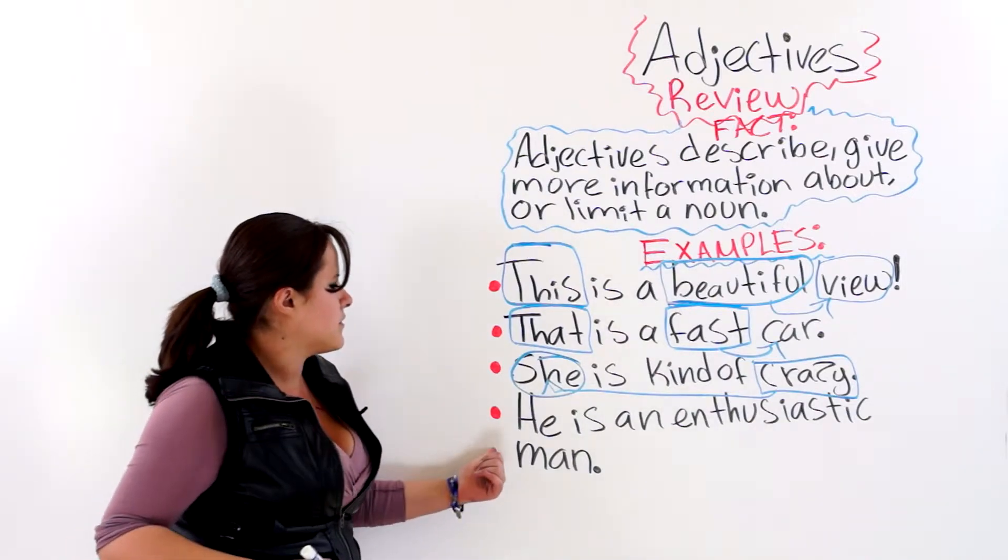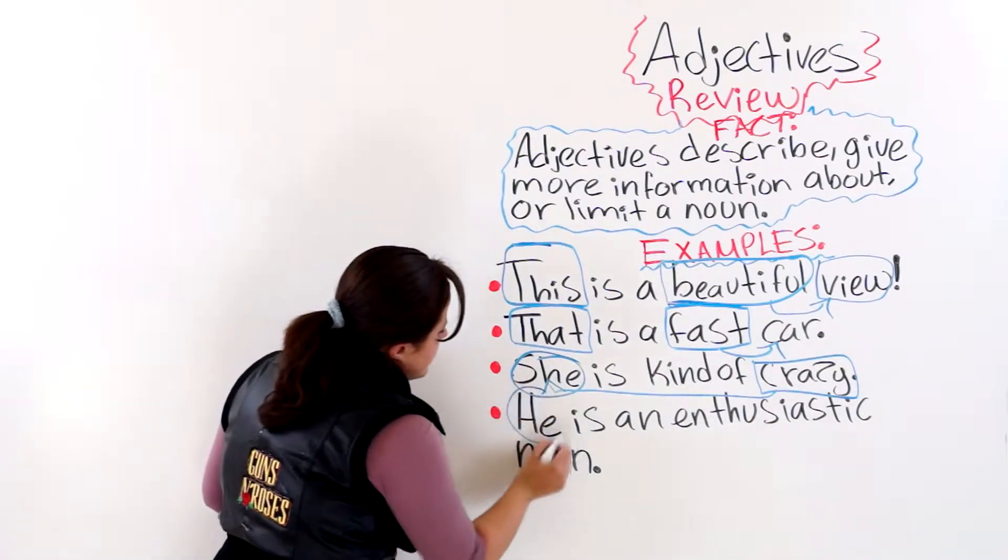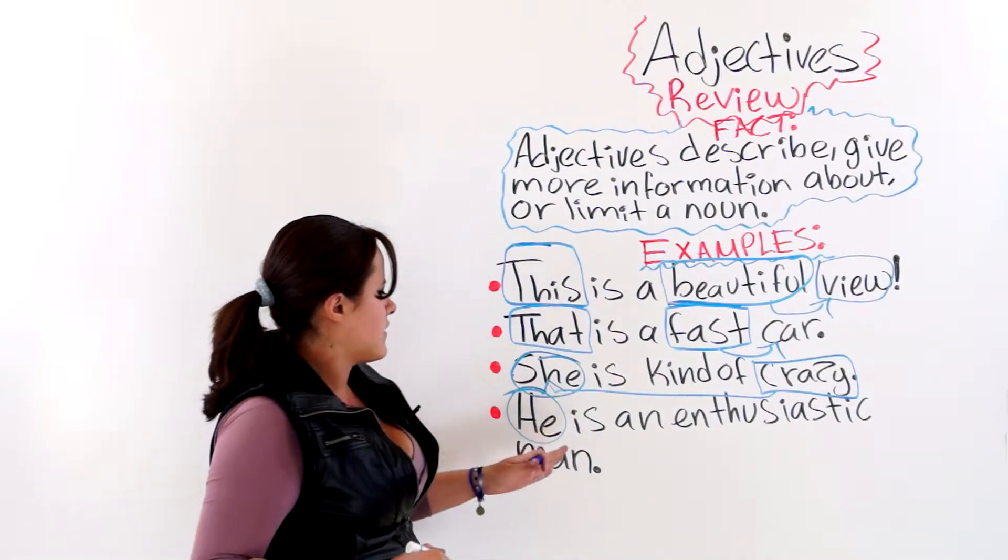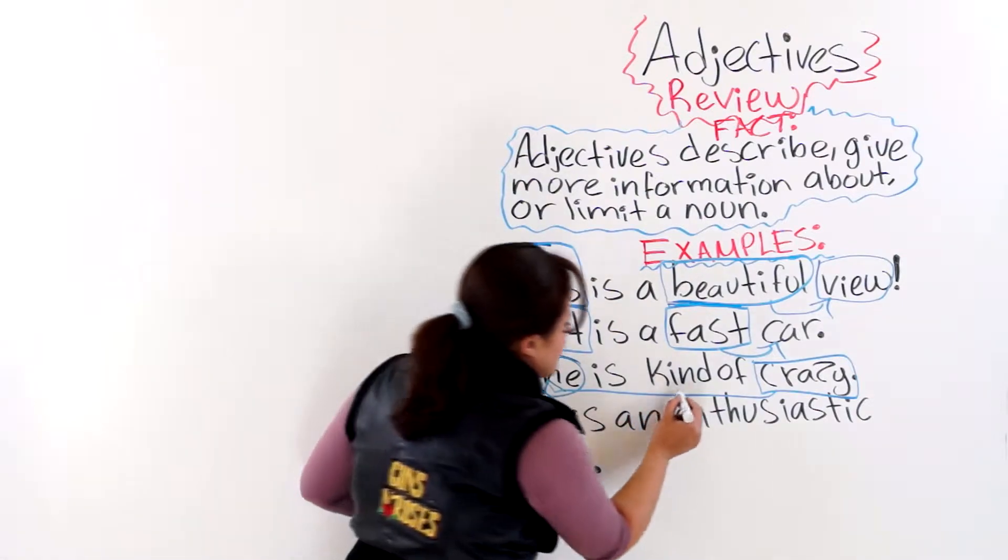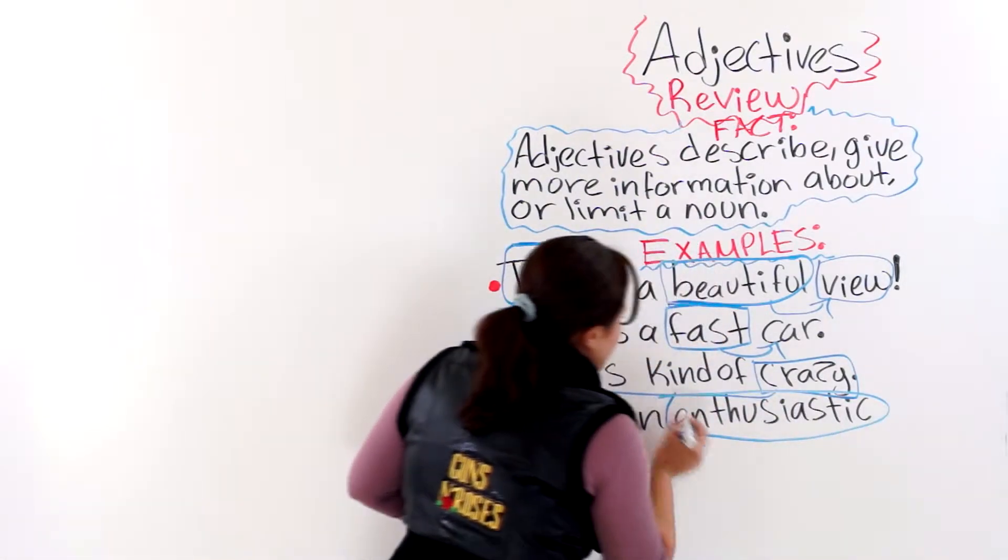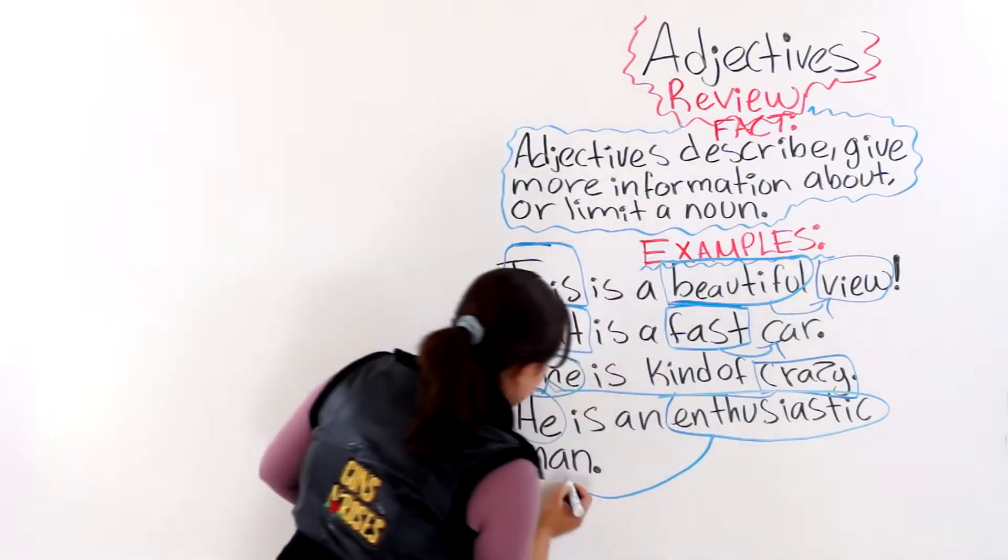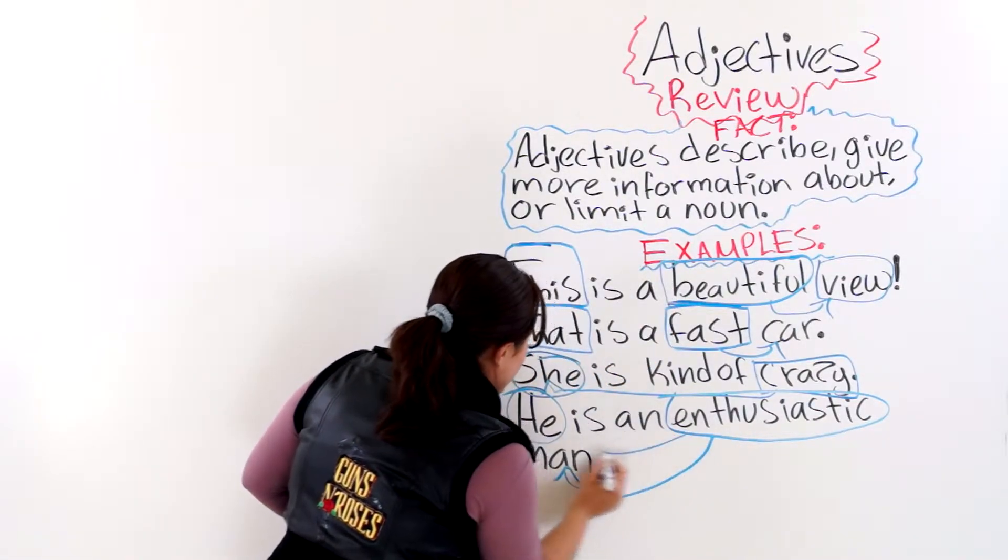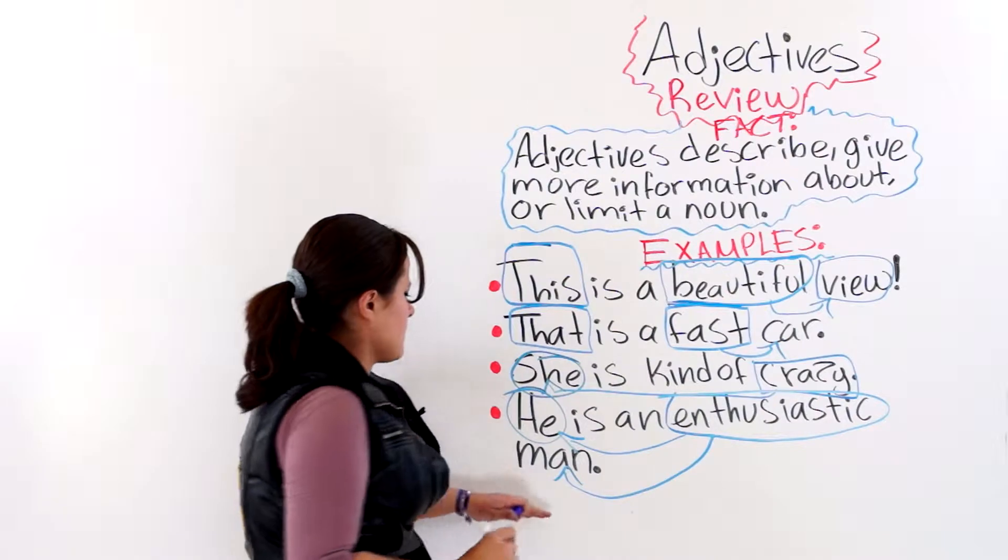And the last one says, he is an enthusiastic man. Enthusiastic would be the adjective that is describing the man and the pronoun, the noun and the pronoun.